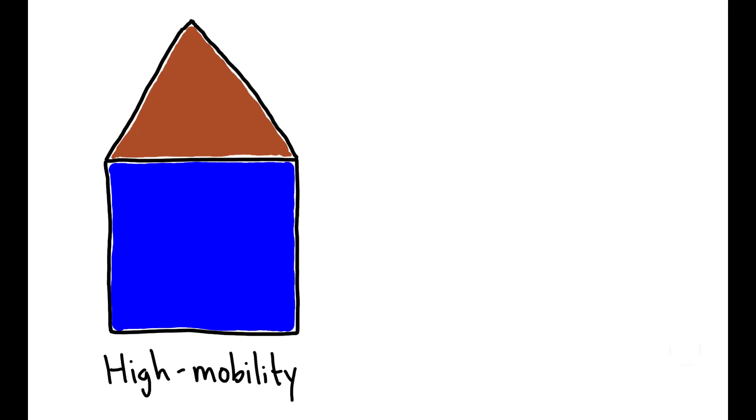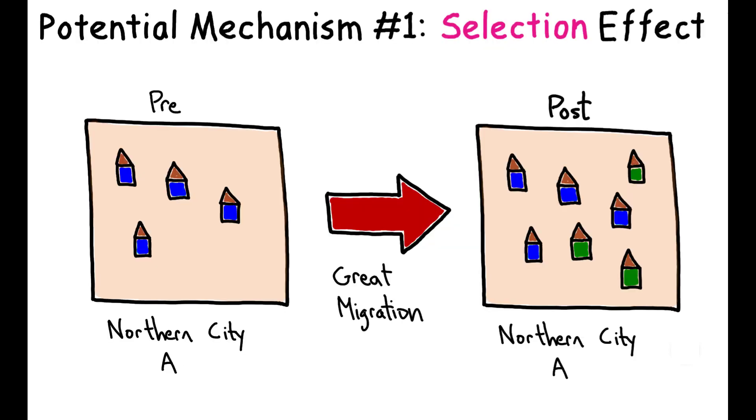For simplicity, suppose that all households can be divided into two types, either high or low mobility. If migrants are more likely to be low mobility types, increasing the fraction of migrants in a given community will decrease average income mobility in the long term.